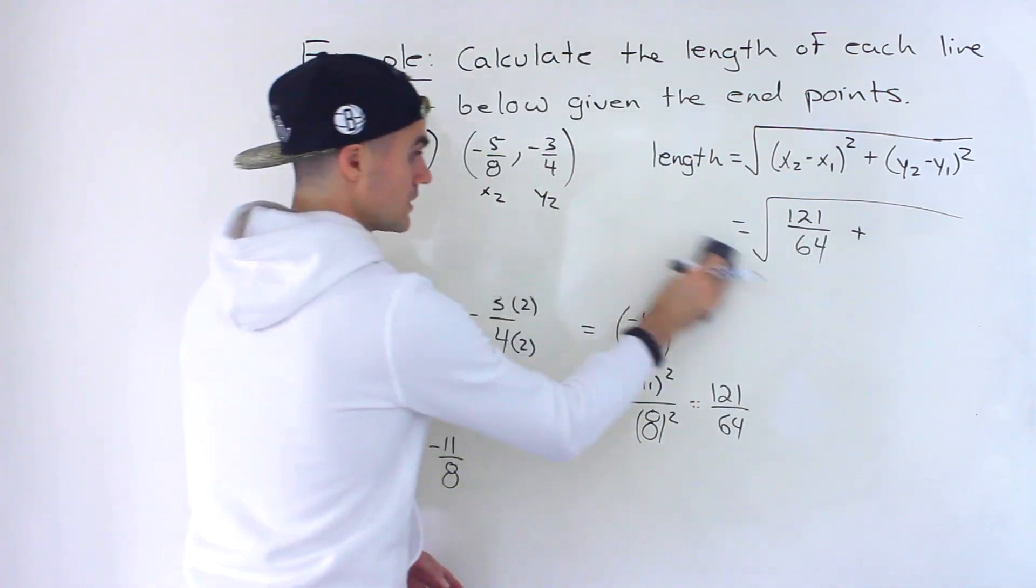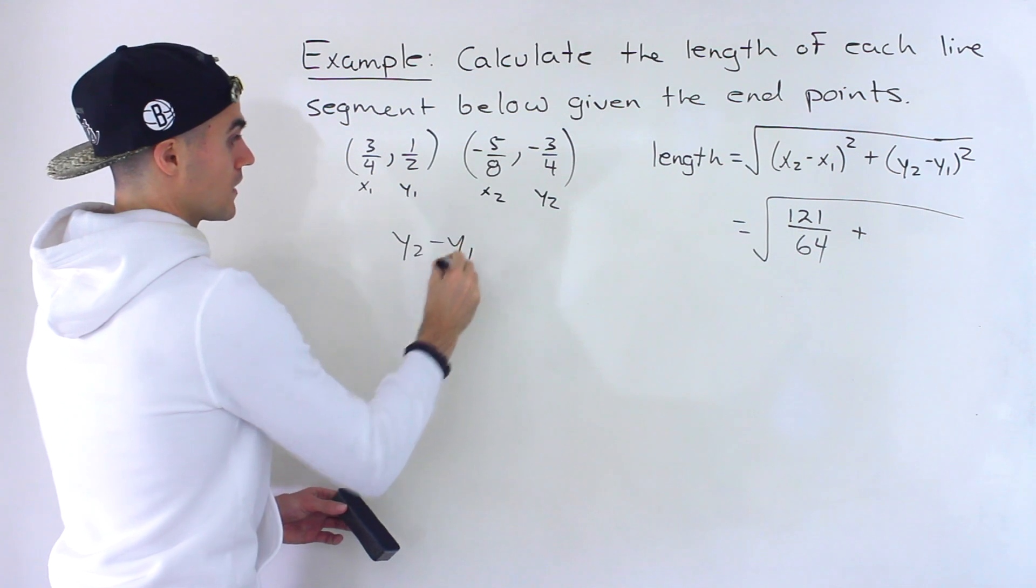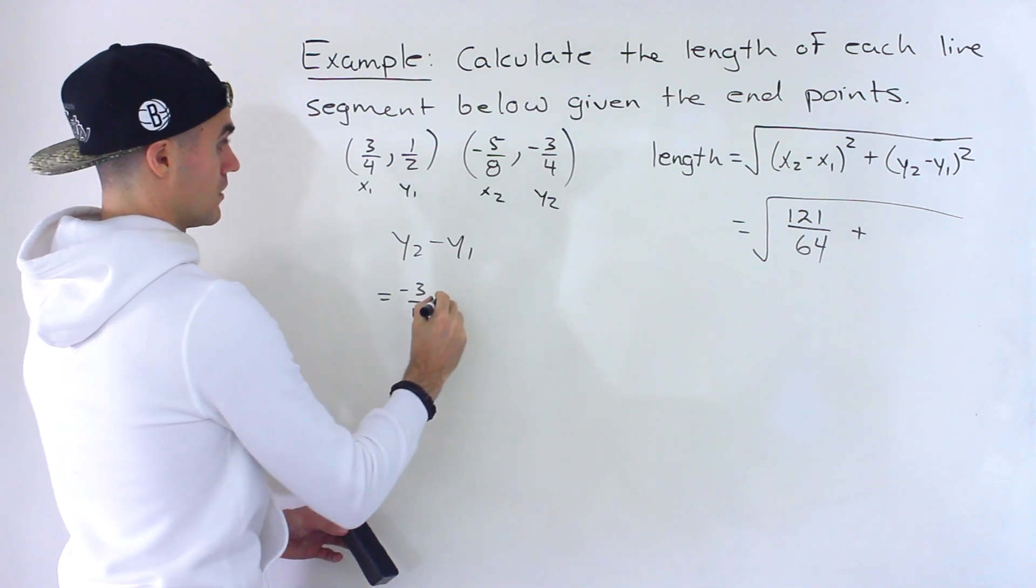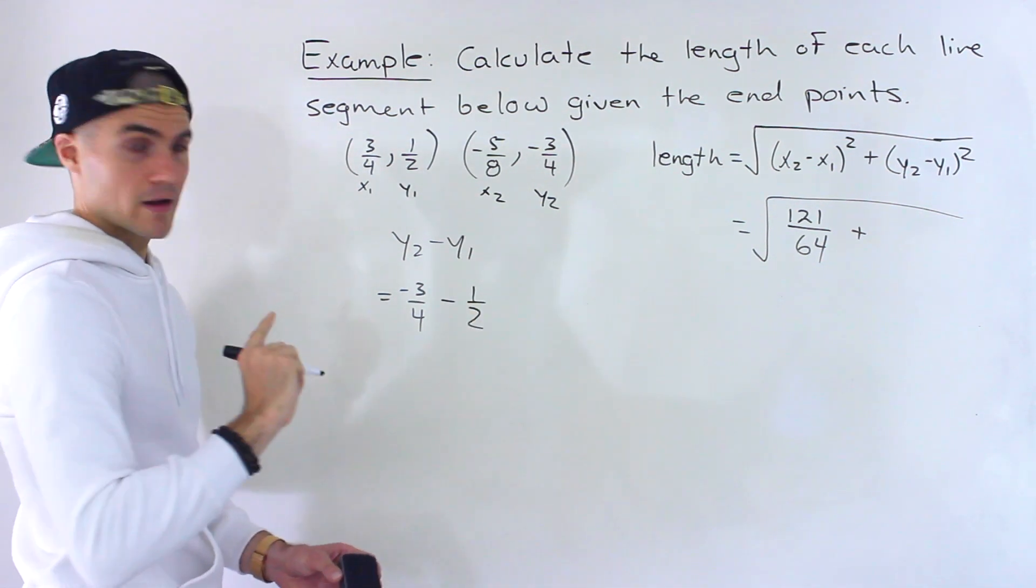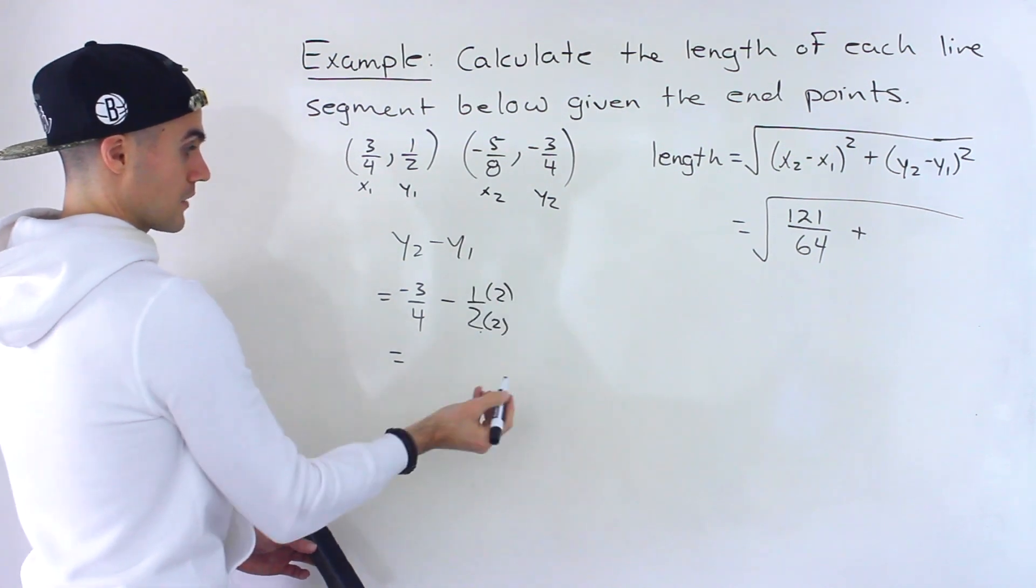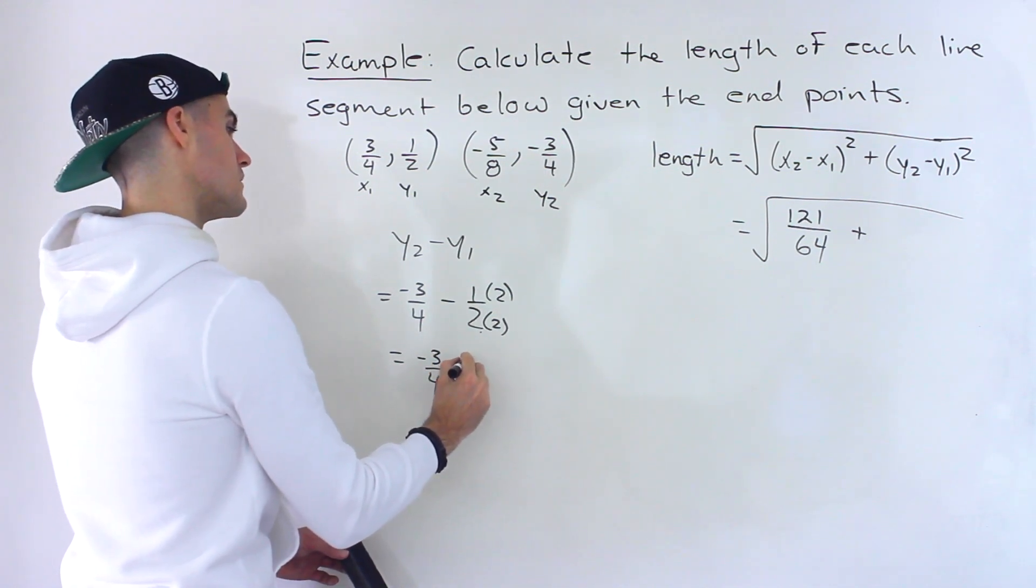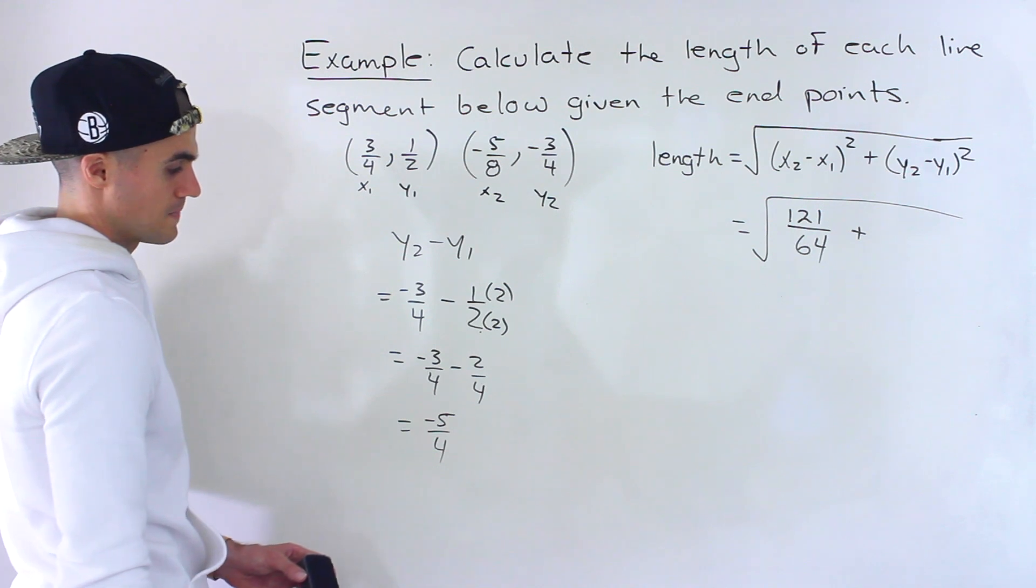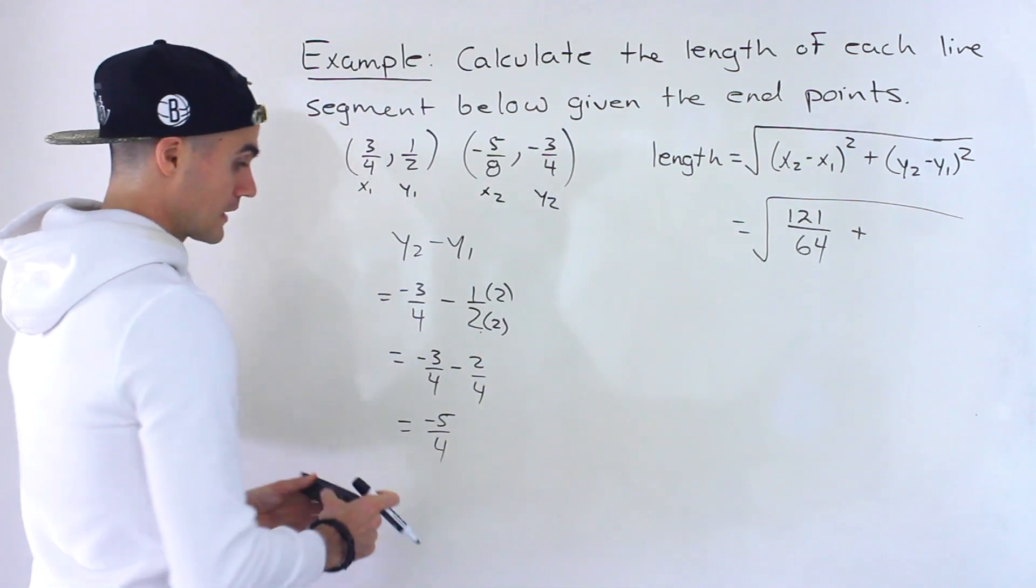Now, what if we do the exact same thing, but with the y values? So let's start with y2 minus y1. That would be negative 3 over 4 minus 1 over 2, y2 minus y1. So this would be, common denominator would be 4. So multiply this by 2, multiply that by 2. So it would be negative 3 over 4 minus 2 over 4, which would give us negative 5 over 4, like that. So the y2 minus y1 ends up being negative 5 over 4.